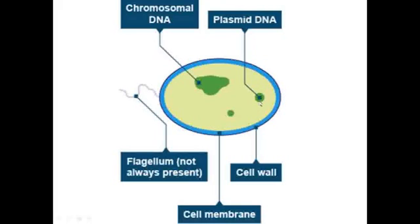Bacteria also have small loops of DNA called plasmids, and these have just a few extra genes on. Some bacteria cells are able to move themselves and they do this by rotating flagella and using them like a rotor. Not all bacteria cells have these.